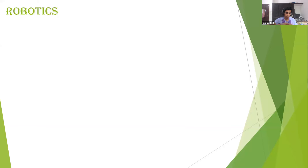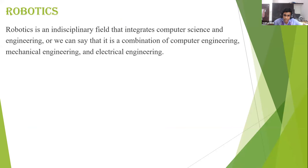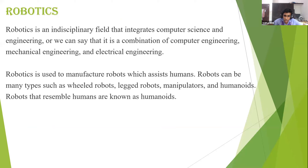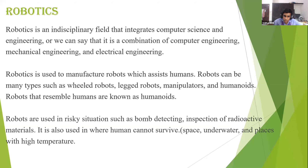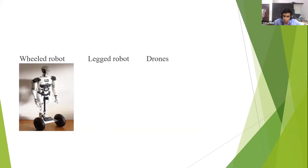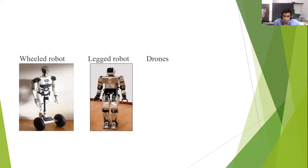Robotics is an interdisciplinary field that integrates computer science and engineering — combining computer engineering, mechanical engineering, and electrical engineering. Robotics is used to manufacture robots that assist humans. Robots can be of many types: wheeled robots, legged robots, manipulators, and humanoids — robots that resemble humans. Robots are used in risky situations such as bomb detection and inspection of radioactive materials in the military, and in environments where humans cannot survive, such as space, underwater, and places with high temperatures.